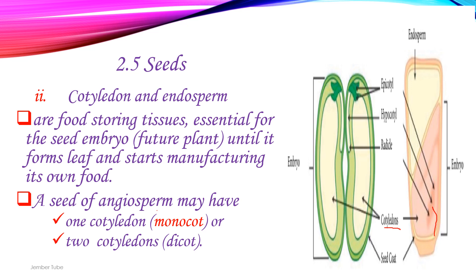The cotyledon consists of the endosperm. The endosperm is the food storage for the seed embryo, providing nourishment until it forms leaves and can begin manufacturing its own food.